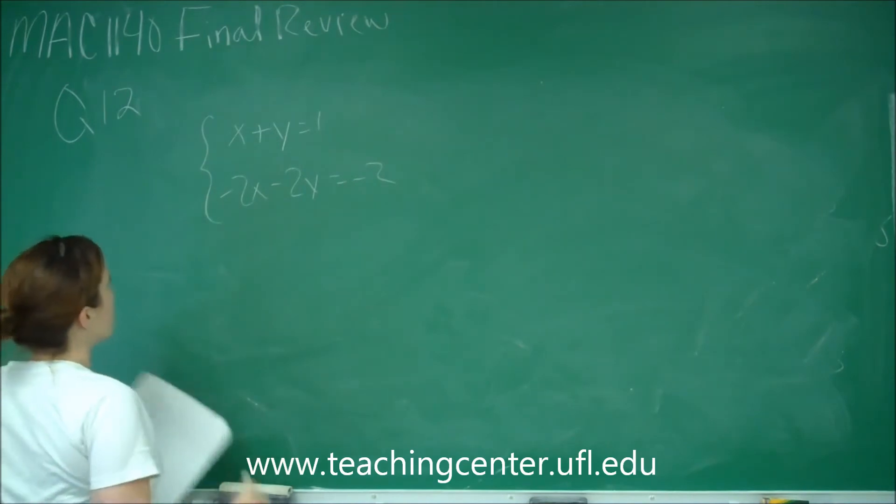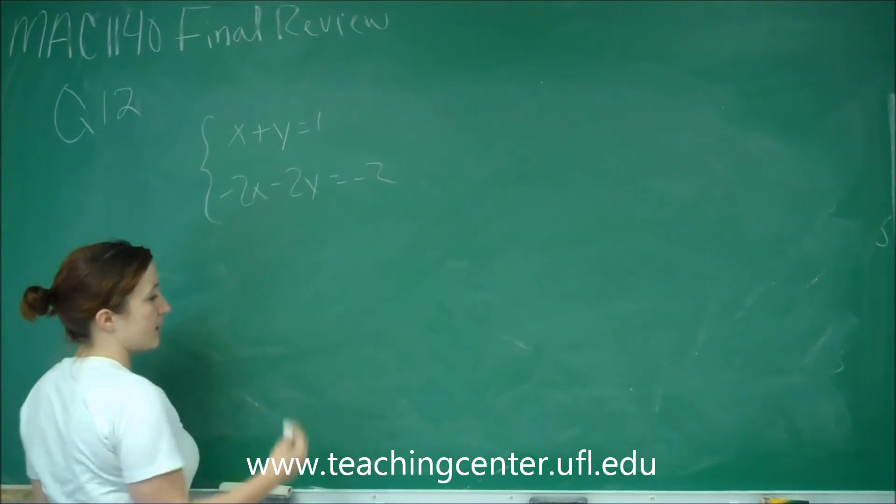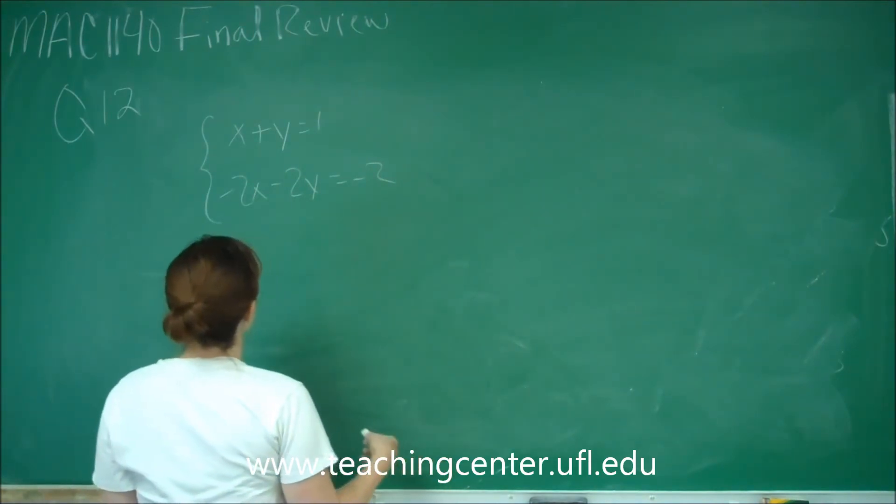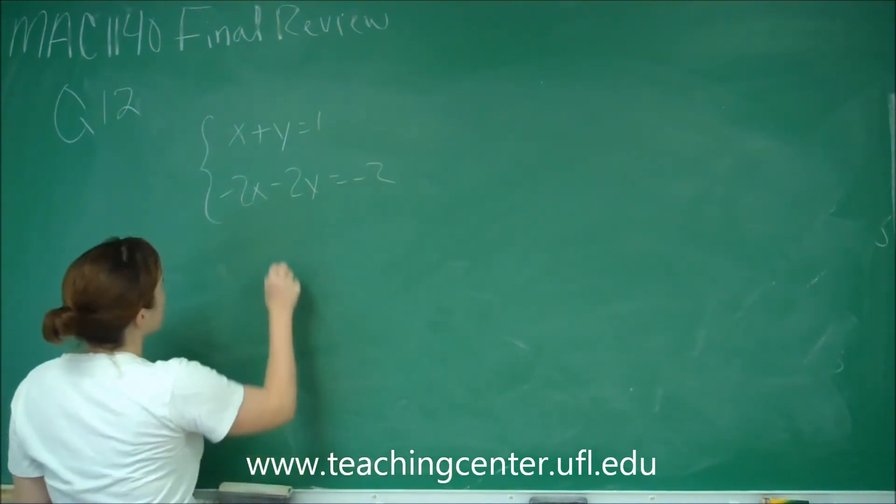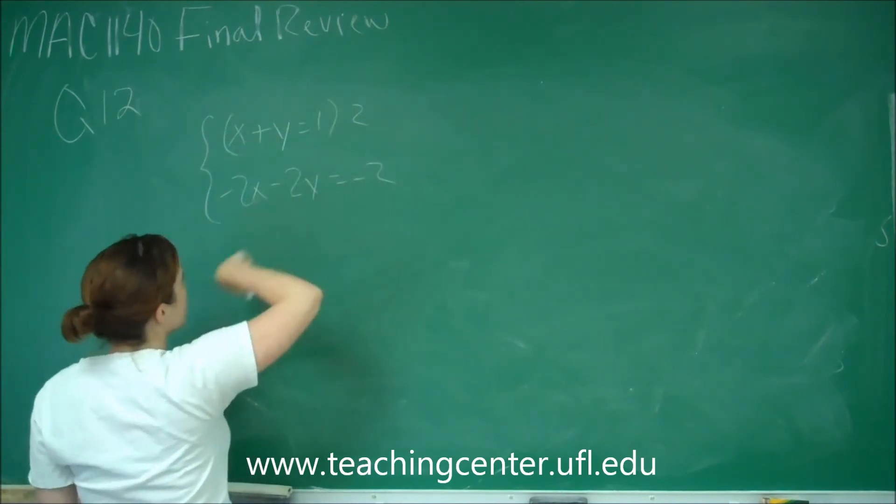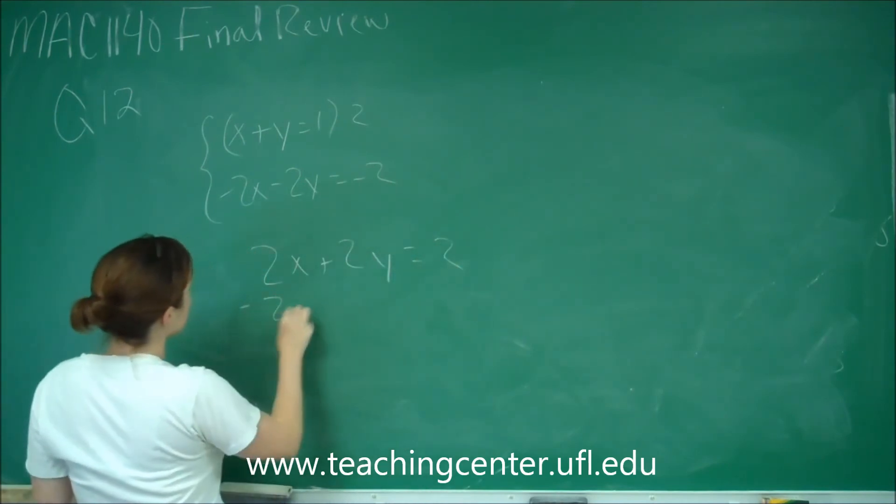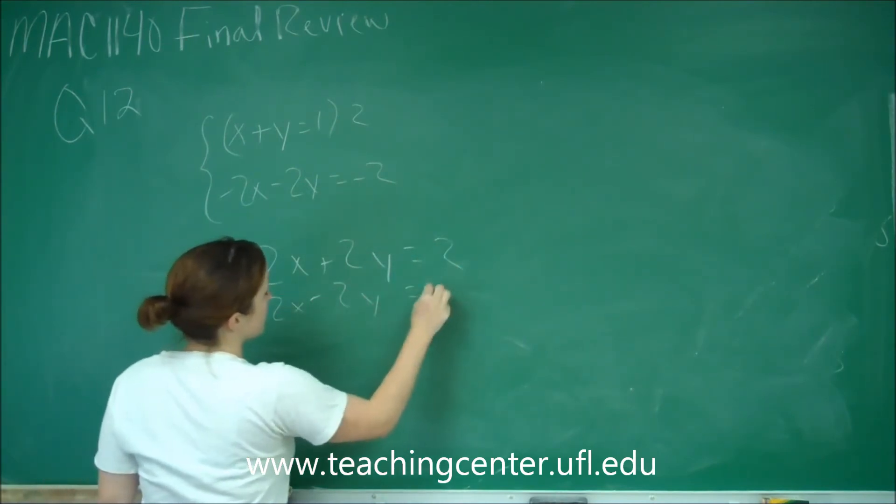So what we're going to do now is solve by adding up and down. I'm going to multiply this whole top part by 2 so that I can cancel out. So I get 2x plus 2y equals 2, and negative 2x minus 2y equals negative 2.